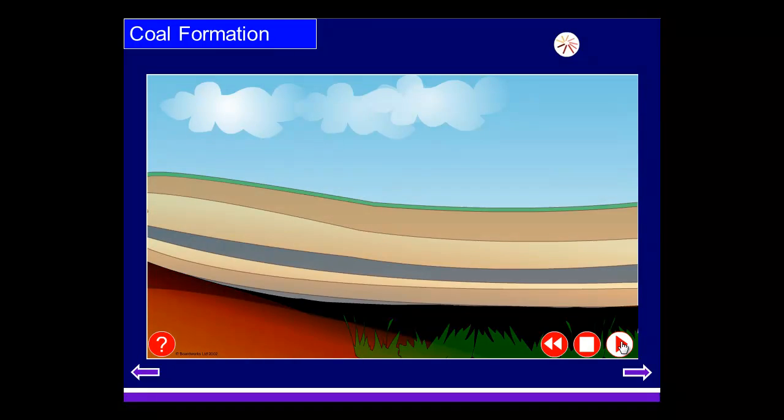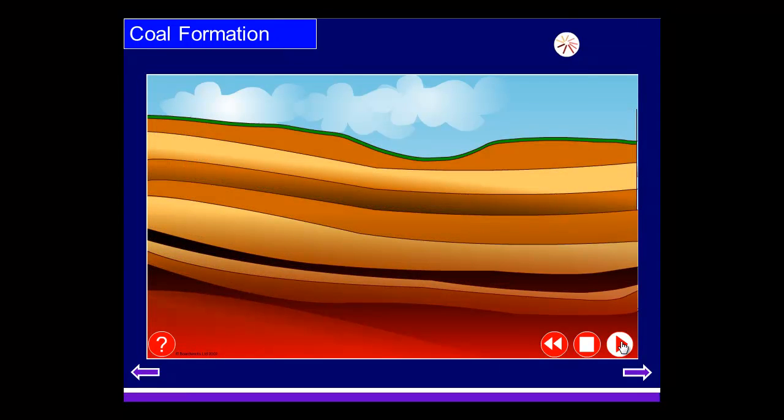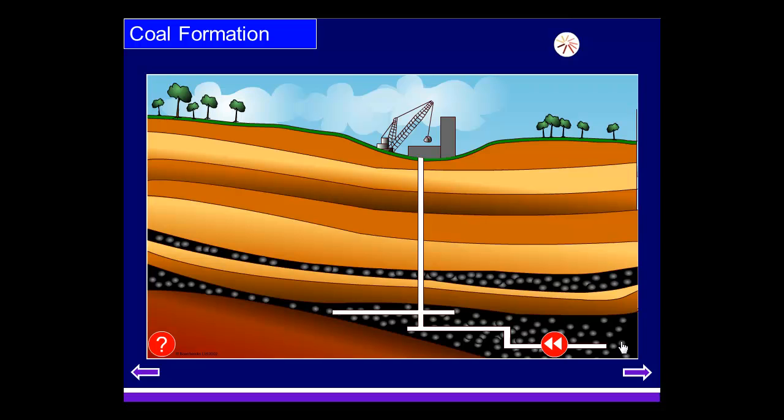Over millions of years, further and further layers of mud and various debris build up on top of these layers of unrotting plants. As these layers build up, greater and greater pressure is built up on these areas, and that causes the mud to turn into rock and the plants to turn into coal. So that's the process of coal formation.